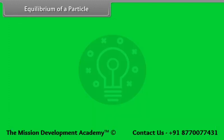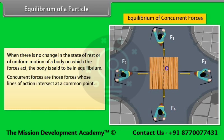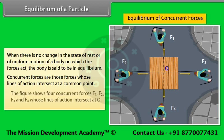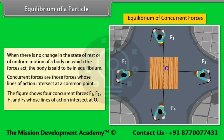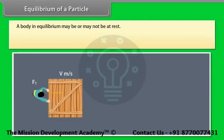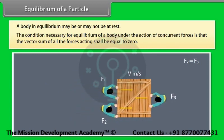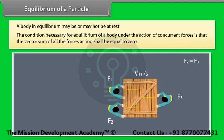Equilibrium of a particle: When there is no change in the state of rest or of uniform motion of a body on which forces act, the body is said to be in equilibrium. Concurrent forces are those whose lines of action intersect at a common point. A body in equilibrium may or may not be at rest. The condition necessary for equilibrium under concurrent forces is that the vector sum of all forces acting shall be equal to zero.